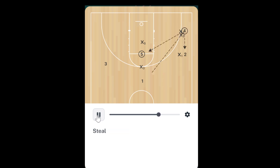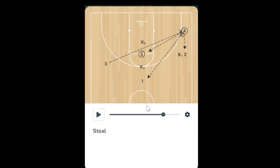Trap. So here are all our steal opportunities. We've got a trap here. It's important for our one man to deny because we don't want this pass coming back — we don't want to bail him out. We want the pass going either to their four, to their five man, to their one, or cross-court, because we'll have our five and our three men waiting to get a steal. That's it. Thanks guys.